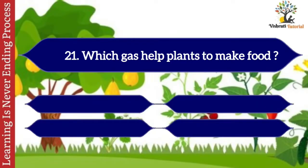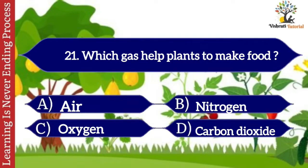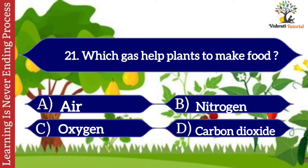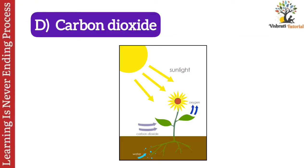Question number twenty-one: which gas helps plants to make food? Options: A. Air, B. Nitrogen, C. Oxygen, D. Carbon dioxide. The correct answer is D. Carbon dioxide. Carbon dioxide gas helps plants to make their own food.